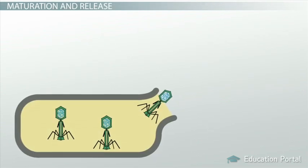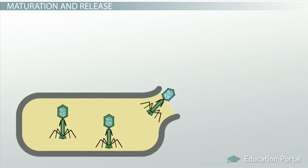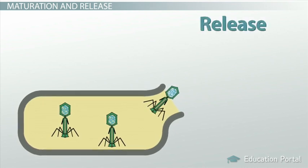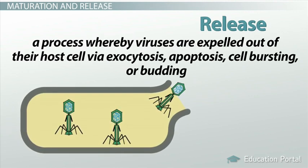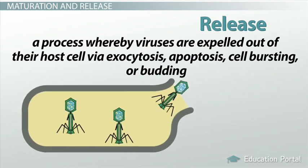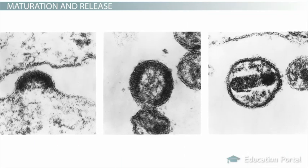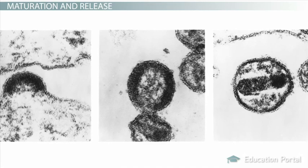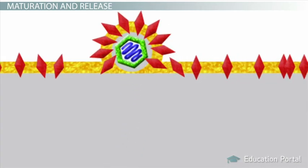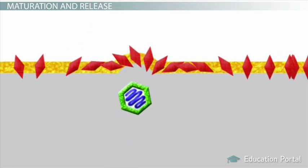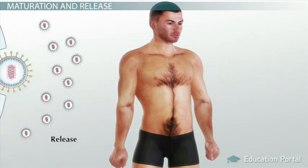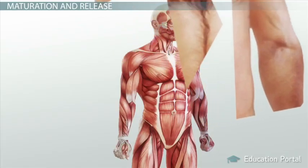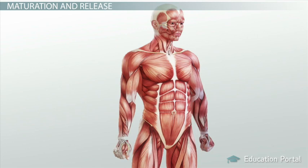Some of these little clones — the viruses produced by the lytic cycle — will undergo maturation before release, and others may undergo maturation after their release. Regardless, the release of viral progeny out of its host cell is a process whereby viruses are expelled out of their host cell via exocytosis, apoptosis, cell bursting, or budding. This viral shedding or release may occur through something called budding, when the virus essentially leaves the cell and takes a piece of the host cell membrane with it. This is especially useful for envelope viruses. However, it's not so useful for the host cell, because a lot of viruses leave the cell and take part of the cell membrane with them, causing the cell to die. Imagine little things leaving your body and taking a piece of your skin as they leave — eventually you'd have no skin left and simply wouldn't be able to survive.